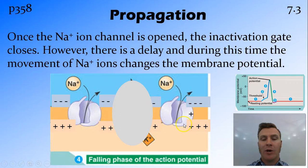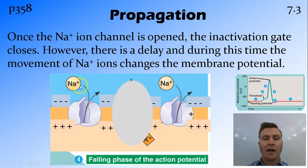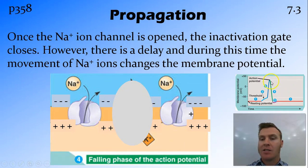What we end up with is more positive ions inside the neuron and fewer outside, with lots of sodium inside making it positive. This is the top or crest of our action potential.